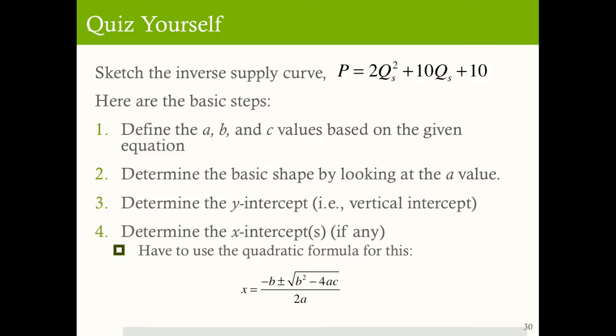Quiz yourself. Sketch the inverse supply curve: p is equal to 2q squared plus 10q plus 10. As a reminder, here are the basic steps: define a, b, and c based on this equation; determine the basic shape by looking at the a value; determine the y-intercept; and determine the x-intercept, if any, using the quadratic formula. Pause the video, write this stuff down, and try it on your own before moving on.